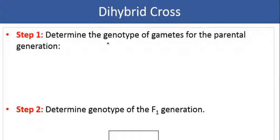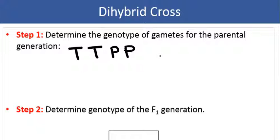Because the parental generation consists of true or pure-breeding varieties, each parent can only produce gametes that are homozygous for these two different traits we're looking at. So this is our cross right here. We have a plant that is tall and purple — those are the dominant traits — being crossed with another plant that is white and short, which are the recessive traits.